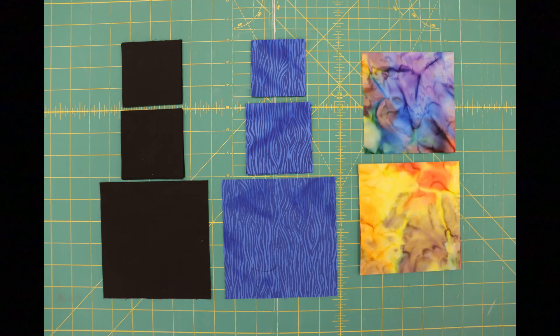Here are all the pieces we'll be using for the block. In our tourmaline we have two four and seven-eighths inch squares and one four and a half inch square. We have in our accent colors, that's my blue, four three by three inch squares and four two and a half by two and a half inch squares, and then one big five and a quarter inch square.